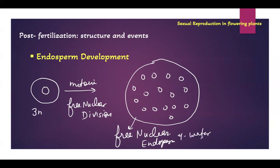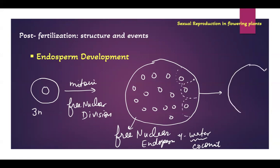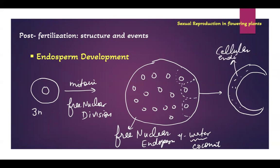The watery part of tender coconut is free nuclear endosperm. Slowly, when endosperm matures, cell wall formation starts and this watery endosperm converts into the white kernel you see inside a coconut. That white part is cellular endosperm. In all seeds this happens, but in coconut you can prominently see both free nuclear endosperm as well as cellular endosperm.